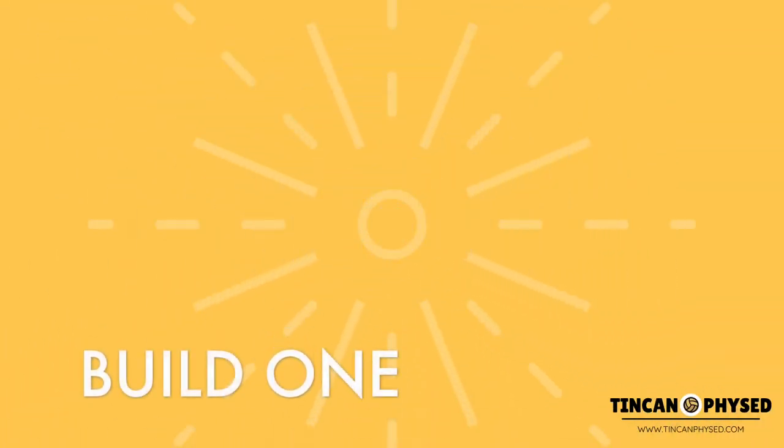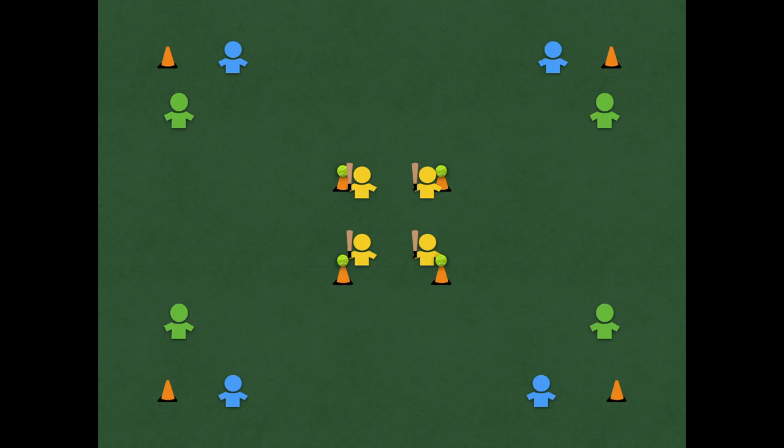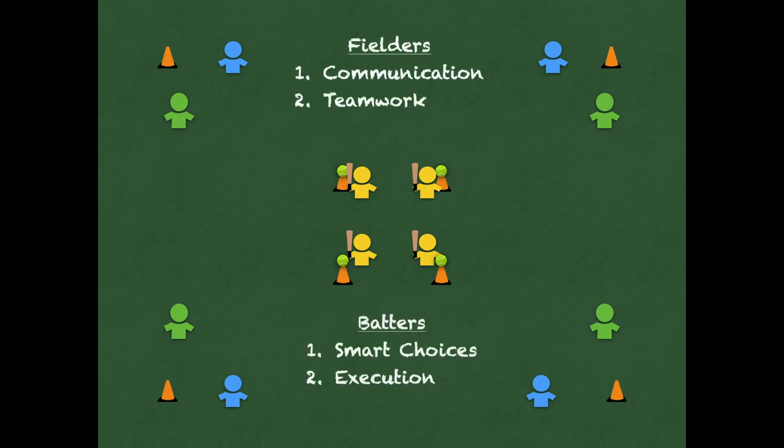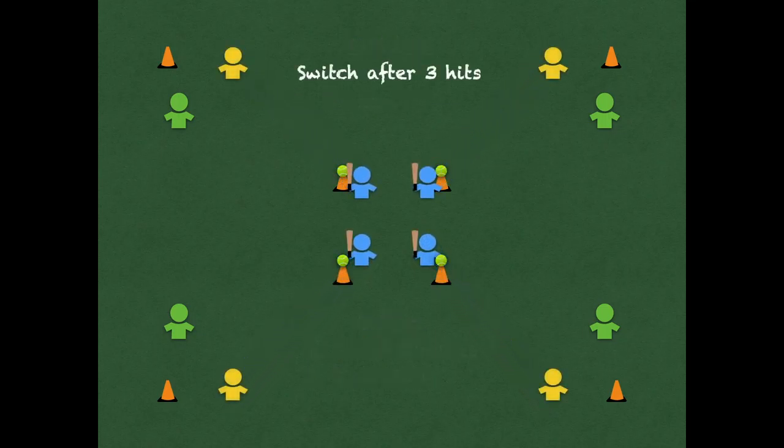Now let's talk about our first progressive build. In this build of the game, the base rules stay the same. We have the same setup but now we only add another fielder. So now there's three teams playing this game. Fielders are working on communication and teamwork while the batters are working on smart choices and executing those choices. Every three hits we switch which team is batting, which team is fielding, and every team gets a chance to bat.